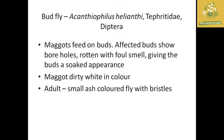The next pest is the safflower budfly, with scientific name Acanthiophilus helianthi, belonging to family Tephritidae and order Diptera. The infective stage is maggots — small wriggler-like larvae which feed on the buds. Affected buds show boreholes and produce a rotten foul smell in the field. The affected bud shows a water-soaked appearance, and the maggots are dirty white in color. The adult is a small, ashy-colored fly with bristles.